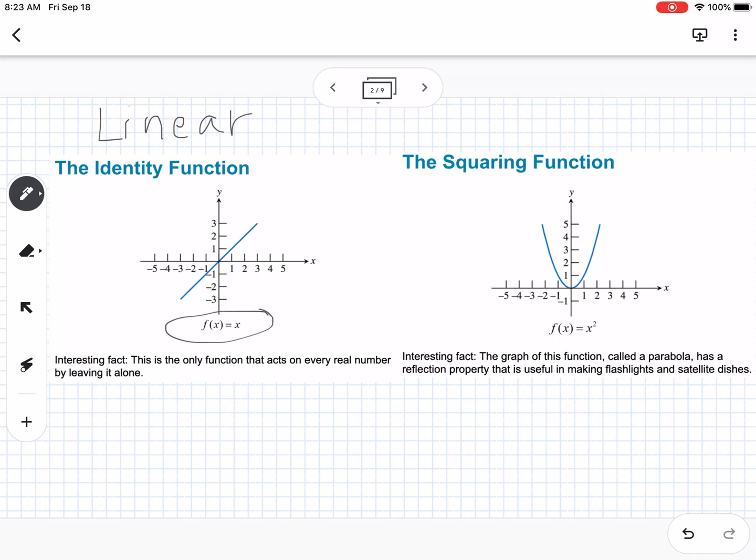The next one is the squaring function, which we also call quadratic, with f(x) = x². The interesting fact is the graph of this function, called a parabola, has a reflection property that's useful in making flashlights and satellite dishes.